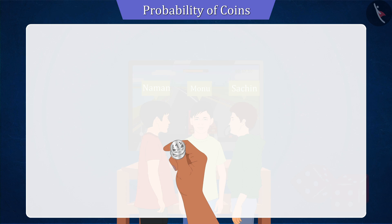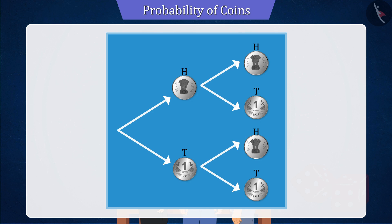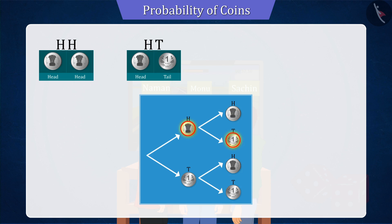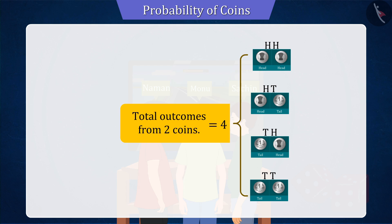Here you can see some possible results obtained when both coins are tossed together. Let's first write down all possible outcomes: head on first coin and head on second coin; head on first coin and tail on second coin; tail on first coin and head on second coin; tail on first coin and tail on second coin. Therefore, we can say that a total of four outcomes are obtained by tossing two coins.